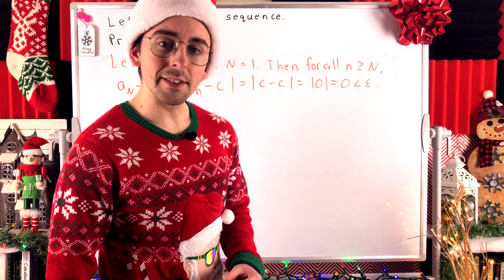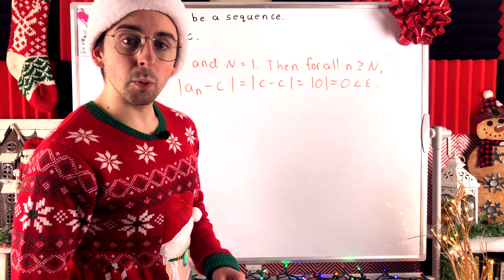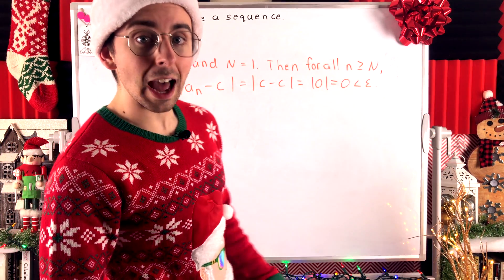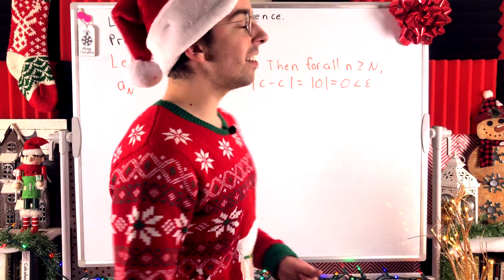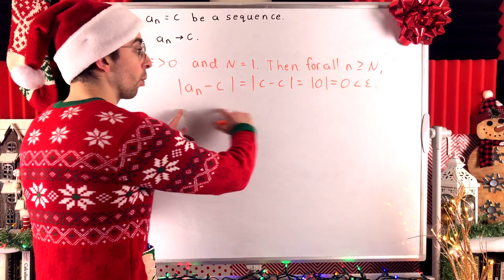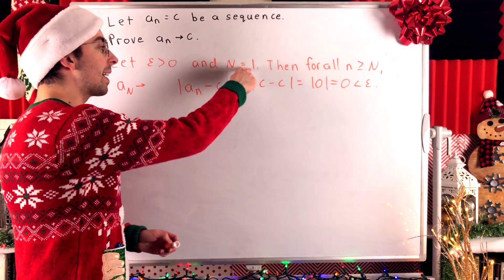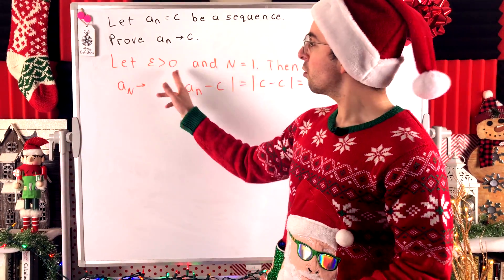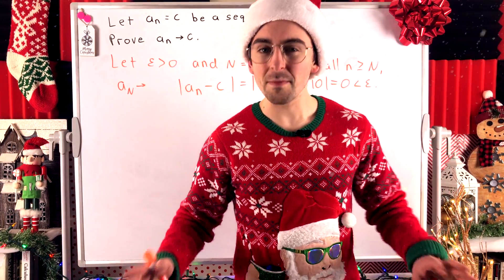Also, in your typical convergent sequence proof, the value for big N that works is actually going to be a function of epsilon, because usually the smaller epsilon is, the bigger big N is going to have to be in order for the rest of the proof to work. In this case, setting big N equal to 1 will always work, no matter how small epsilon is, because our sequence is constant.